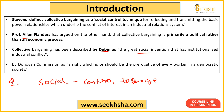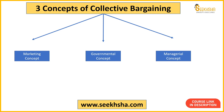Then there was a commission called the Donovan Commission. It says collective bargaining is 'a right which is or should be the prerogative of every worker in a democratic society.' So it says this right of collective bargaining must be available to every worker in a democratic society. So these are some of the important definitions.